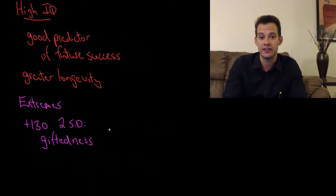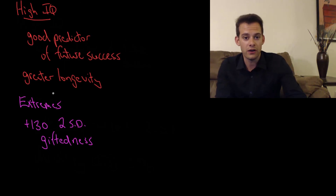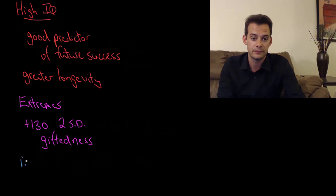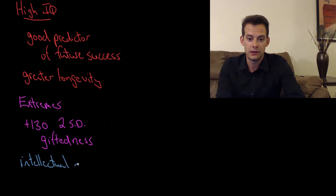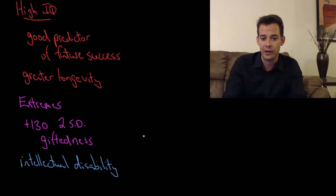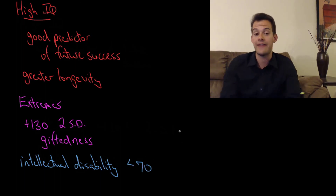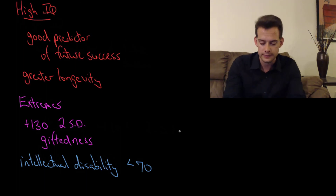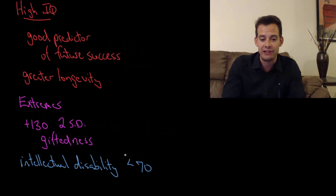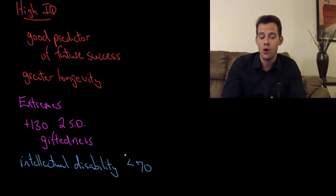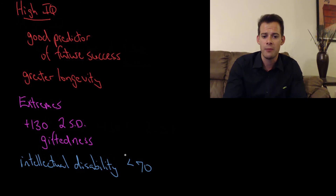For the other extreme, low IQ is defined as intellectual disability. The previous term mental retardation is no longer used. Intellectual disability is defined as an IQ score below 70 — two standard deviations below the mean — a range where people start having problems completing everyday tasks and may not be able to care for themselves. We'll discuss intellectual disability more in the next video, including what causes these differences in IQ.